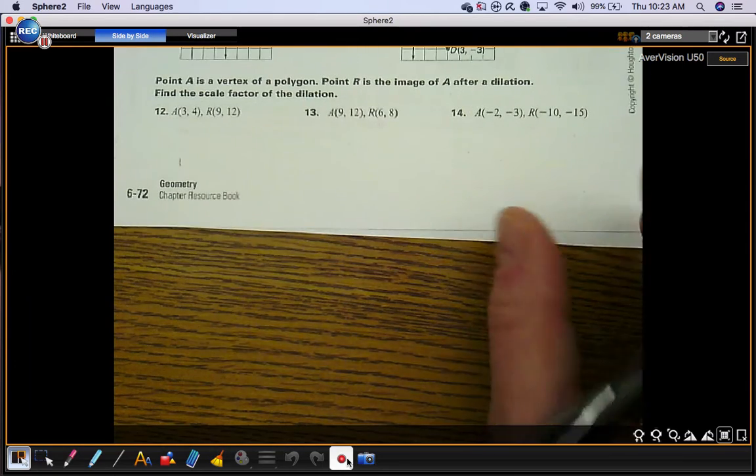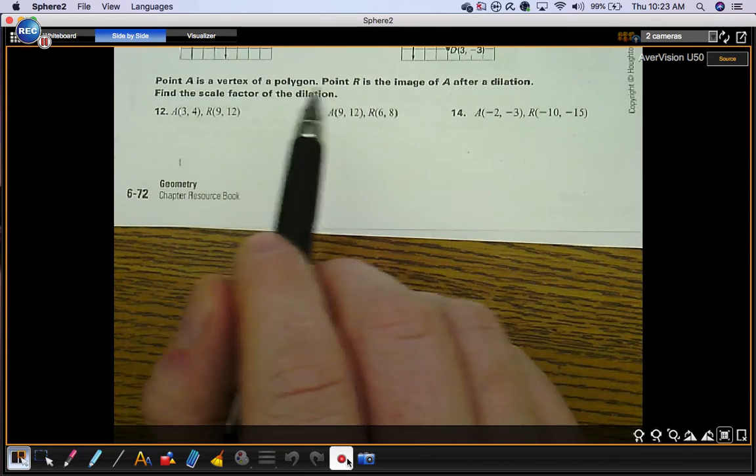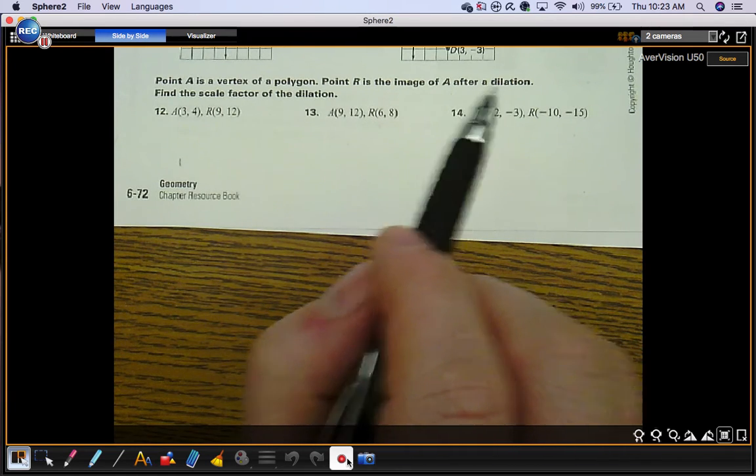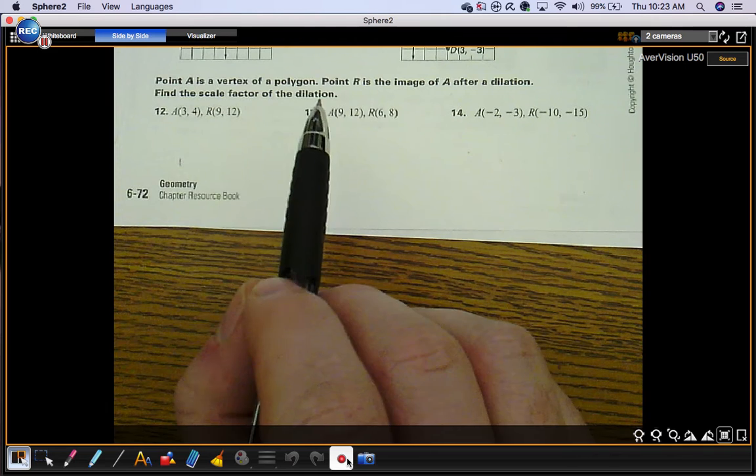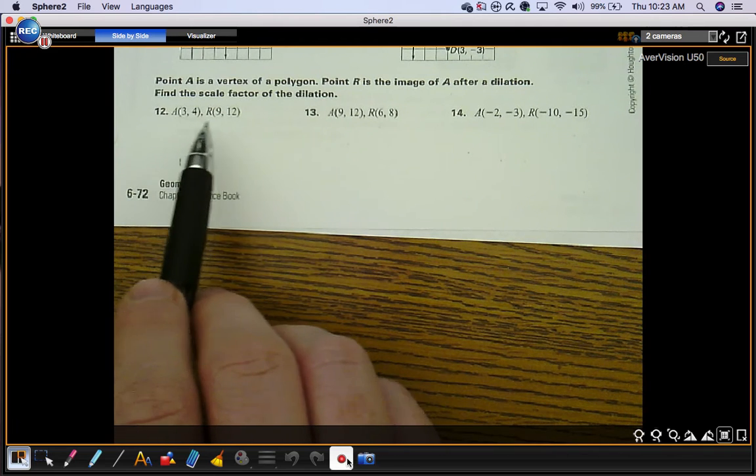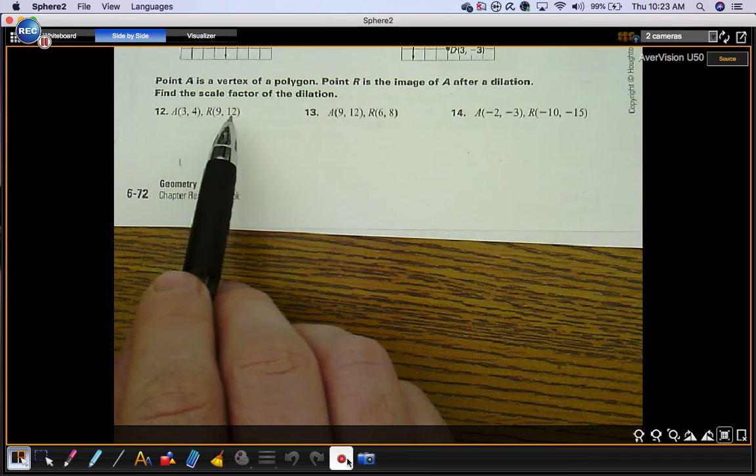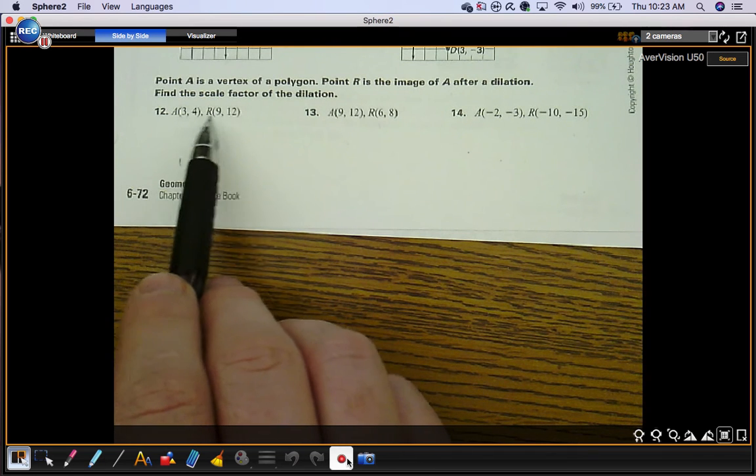Next section, point A is a vertex of a polygon. Point R is the image of A after a dilation. Find the scale factor of the dilation. So, this is where your point was. This is where it is now. What did you do to this point to get that point? What are you going to multiply these by to get that?